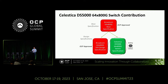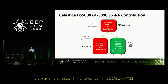This contribution follows that process — we're contributing a design specification today for our 64 by 800 gig, or 51.2T, switch to Open Compute, seeking OCP Inspired status once the specification is approved. This specification follows the Broadcom base specification; Broadcom contributed a 64 by 800 gig base specification previously, and also a design specification for their software validation kit. Our specification follows that base spec and is a go-to-market production-level switch.